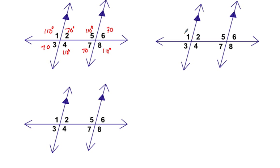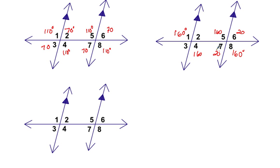Let's look at the next picture. Say angle 2 is 160 degrees — see if you can fill in the rest of that diagram. Hit pause and come back to check. Angle 4 would be 160, angle 8 would be 160, angle 5 would be 160, angle 6 would be 20, angle 7 would be 20, angle 3 would be 20, and angle 1 would also be 20. Those are all the angles together for that second diagram.